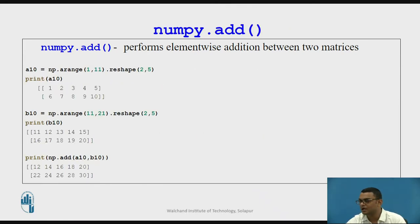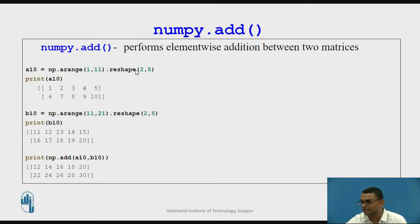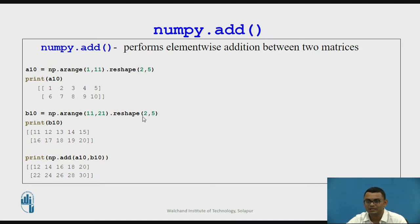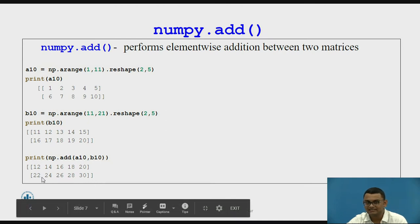Let us start with the add function. I have a single dimensional array reshaped into a two-dimensional array having two rows and five columns. Similarly, array B10 has elements from 11 to 20 arranged in two rows and five columns. We perform addition of matrix A10 and B10 — so 11 and 1 gives us 12, 12 and 2 gives us 14, and so on.